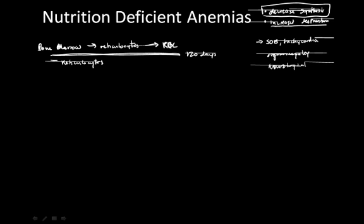Anemia can be a result of dietary history — which we'll discuss primarily as nutritional deficiencies — but it can also be the result of genetics and blood loss. Occult blood loss, either as melena or hematochezia in the GI tract, is something that doctors generally have to look out for when trying to diagnose the etiology of anemia.